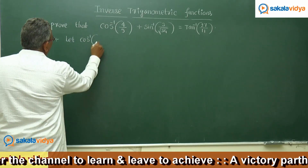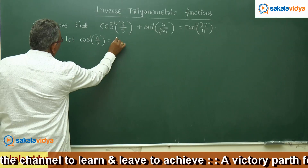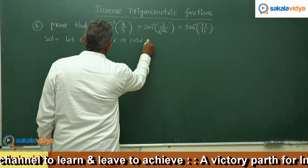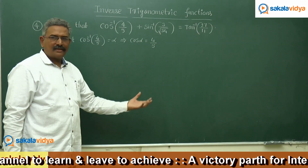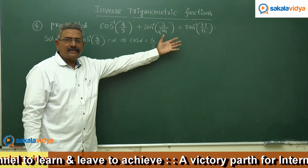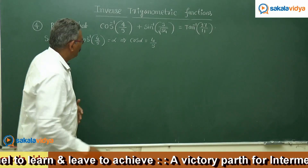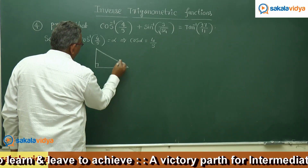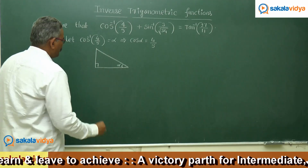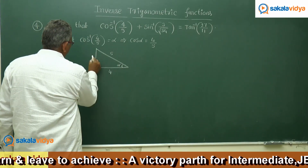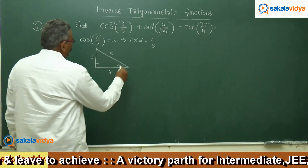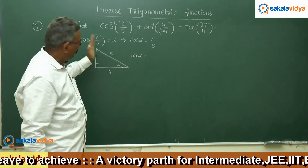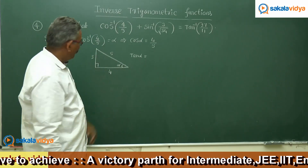Let cos inverse of 4 by 5 equal alpha. Now cos alpha equals 4 by 5. We need to find tan alpha, so let us consider a right angle triangle with angle alpha. Cos alpha equals 4 by 5 means the adjacent side is 4 and the hypotenuse is 5, so the opposite side is 3. Tan alpha equals opposite side by adjacent side, which is 3 by 4.